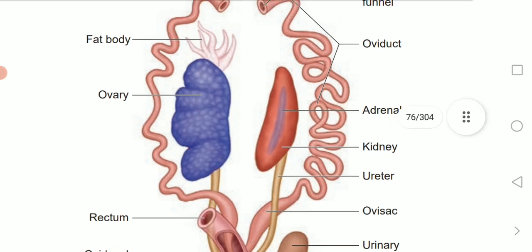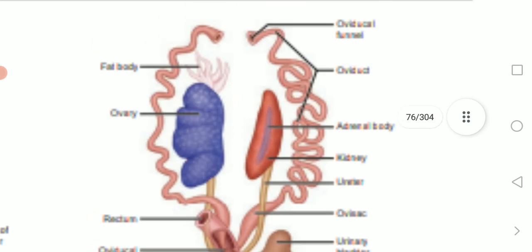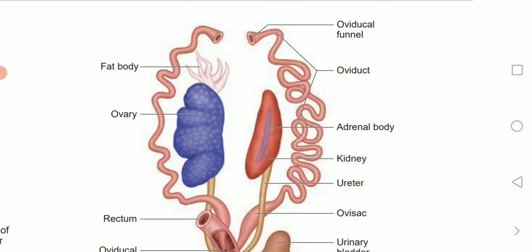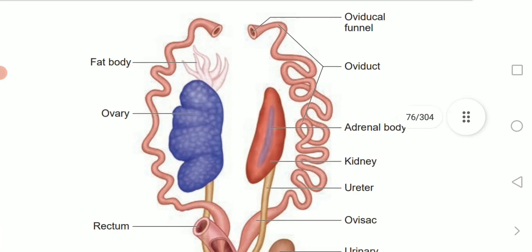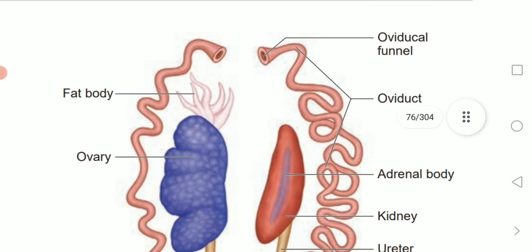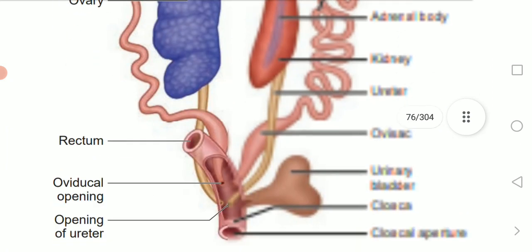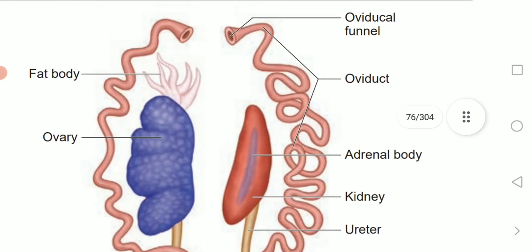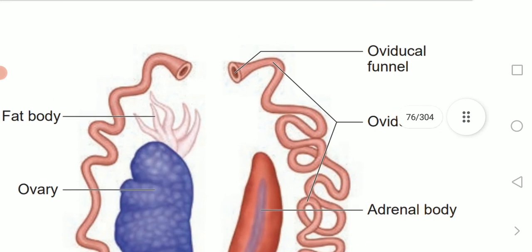There is an oviduct present on each side of the kidney. Each oviduct opens into the body cavity at the anterior end by a funnel-like opening called ostia — that funnel-like structure at the entry point is called ostia.